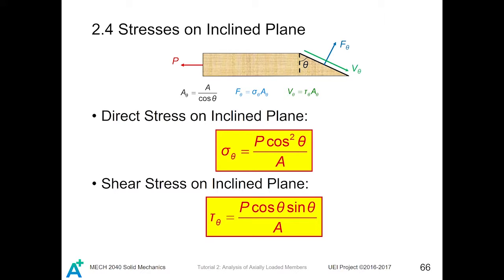We see those two important results: direct stress of the inclined plane is given by P cosine squared theta divided by A, while shear stress of the inclined plane is given by P cosine theta sine theta divided by A.